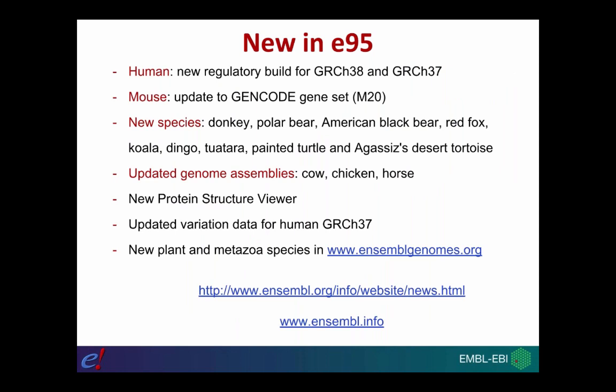In Ensembl 95 there are a few highlights. For human, we have a new regulatory build for both GRCh38 and GRCh37 — the two versions of the human genome assembly that we actively support. We also have an update to the mouse gene set bringing us to GENCODE M20. There are nine new vertebrate species: donkey, polar bear, American black bear, red fox, koala, dingo, tuatara, painted turtle, and desert tortoise. We've also updated the genome assemblies for three important agricultural species: cow, chicken, and horse.